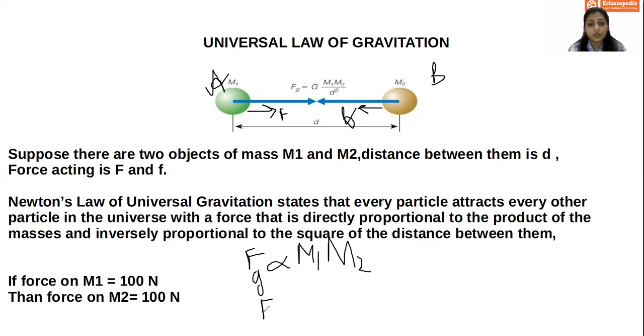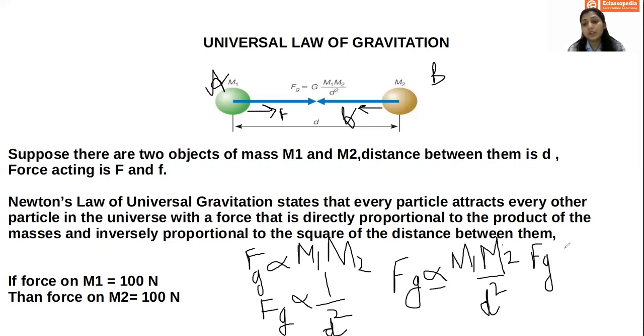And over here we see that it is inversely proportional to square of distance between them. So we can write gravitational force is inversely proportional to square of distance between them. So combining these two, what we get? M1 and M2 by d square. Now here we have sign of proportionality. To remove sign of proportionality, we will substitute over here gravitational constant.